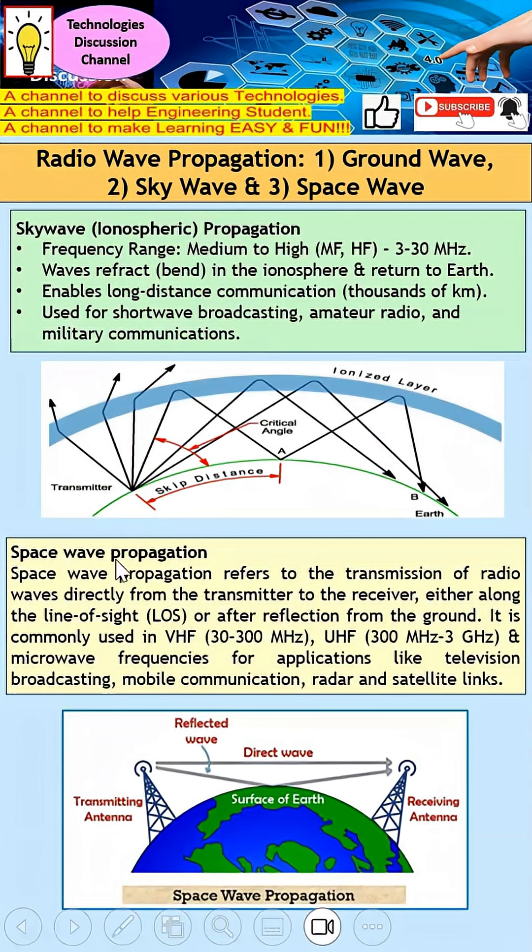Next is space wave propagation. This refers to the transmission of radio waves directly from transmitter to receiver, either through line of sight or after reflection from the ground. It's commonly used in VHF (30 to 300 megahertz) and UHF (300 megahertz to 3 gigahertz), mainly for television broadcast, mobile communication, radar, and satellite links.